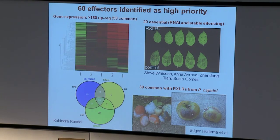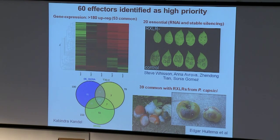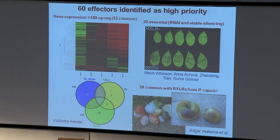Another factor that's helped us select effectors is whether they're critical to infection. We've used transient RNAi and stable transformation to silence RxLRs, and we can see a significant reduction in virulence of P. infestans when we've silenced 20 of these genes. Another factor we take into consideration is comparison with Phytophthora capsici — Edgar Huitema, who's here in Dundee, has now got a capsici lab. Capsici shares 39 out of our 60 selected effectors and they have potential common ancestry.